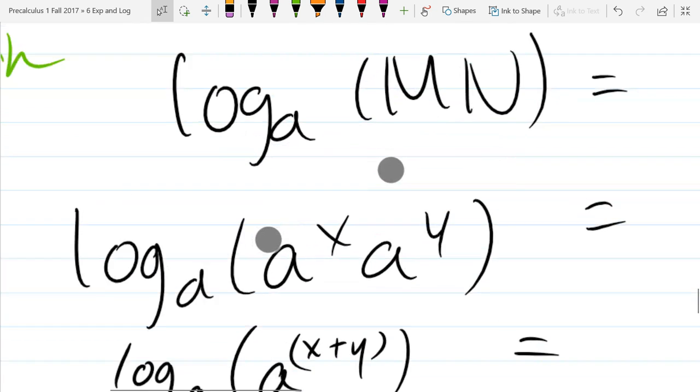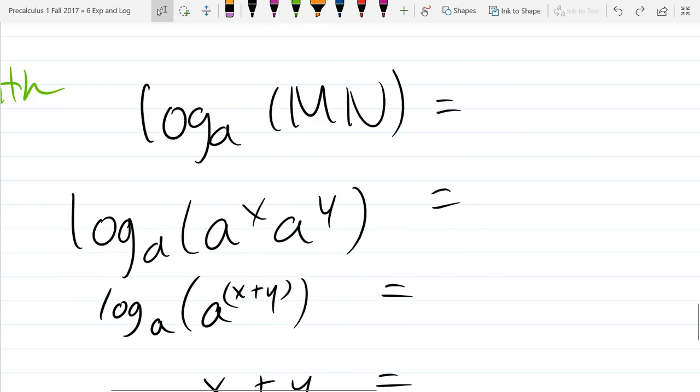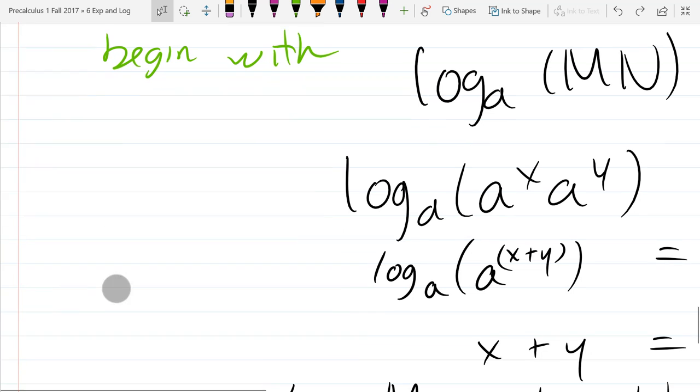The other ones you can prove, they work out in similar ways. If you divide, if it was M divided by N, I would basically just subtract the powers right there. And it would be really similar.